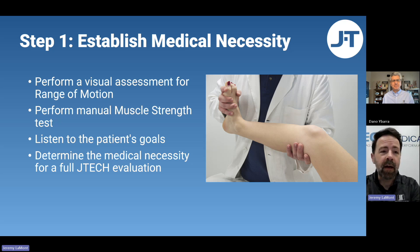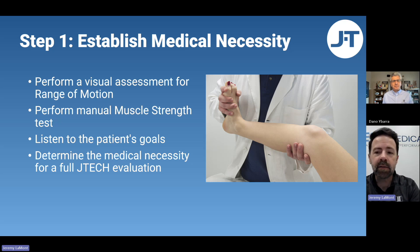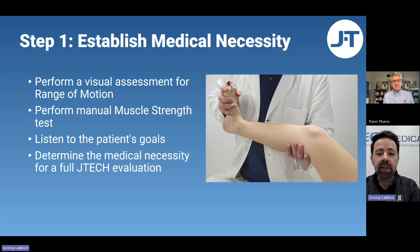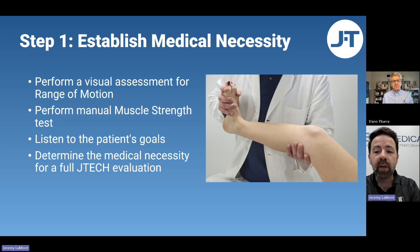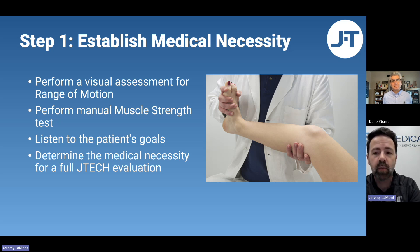Step one is establishing medical necessity. This is something you're already doing — gathering information from the patient, listening to their explanations of pain, doing visual inspection, eyeballing range of motion, and manual muscle strength testing to establish whether there's a basis for loss of function. You discuss their objectives for treatment. If the patient has a clear, emotionally driven goal — for example, 'I want to be able to pick up my child without pain' — they'll be more motivated to stay with the treatment program. If you're billing insurance, you're most likely billing the initial exam under code 99203 for visual inspection of range of motion, muscle strength, and so on, which establishes medical necessity for performing objective evaluations with your JTEC system.